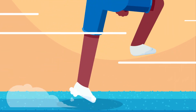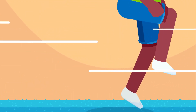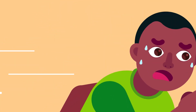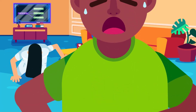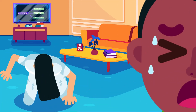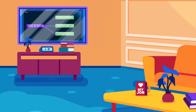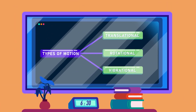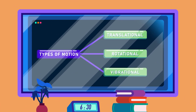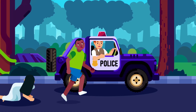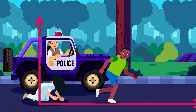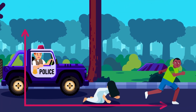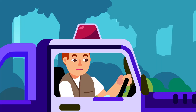Motion is an integral part of our daily life, from Usain Bolt's phenomenal sprint to a feet-dragging ghost coming out from the TV. In another video, we learned that motion has many types. They can be visualized using graphs that depict changes in quantities related to the movement.